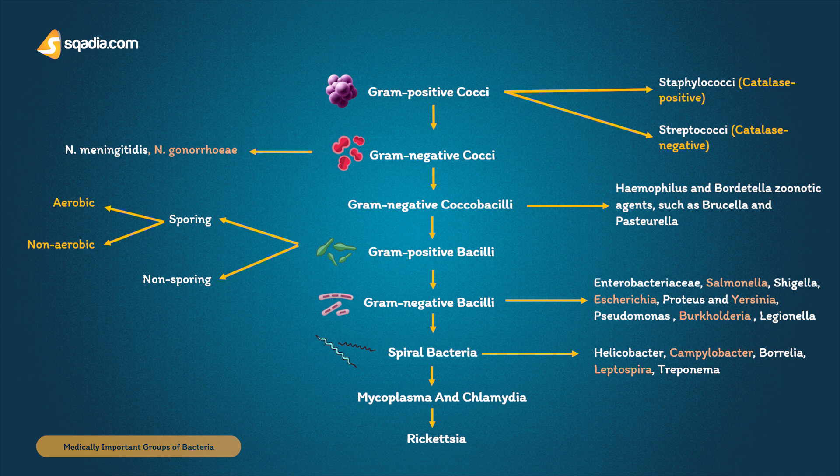Borrelia may cause a chronic disease of the skin, joints, and central nervous system called Lyme disease, caused by Borrelia burgdorferi, or rarely relapsing fever, caused by Borrelia duttoni and Borrelia recurrentis. Leptospira are zoonotic agents that cause an acute meningitis syndrome that may be accompanied by renal failure and hepatitis. The Treponema include the causative agent of syphilis, Treponema pallidum.